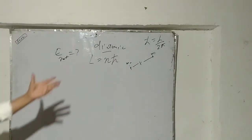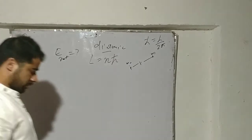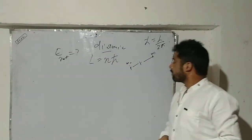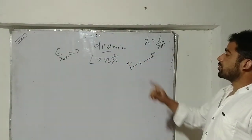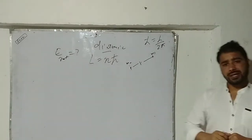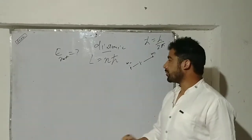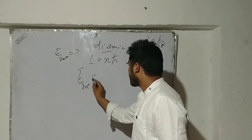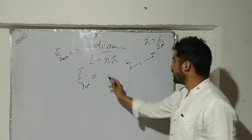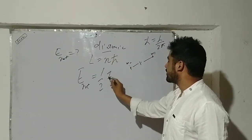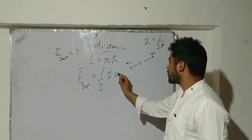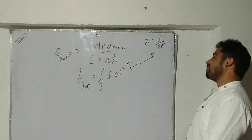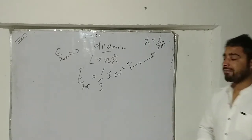To approach this problem, I will use the expression for rotational kinetic energy. When a particle rotates about some particular axis with angular velocity ω, it has rotational kinetic energy E = ½Iω², where I is the moment of inertia.